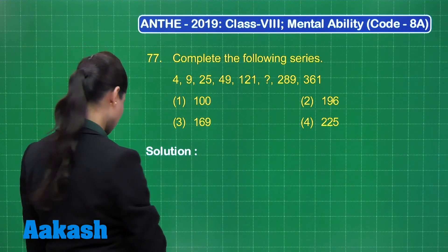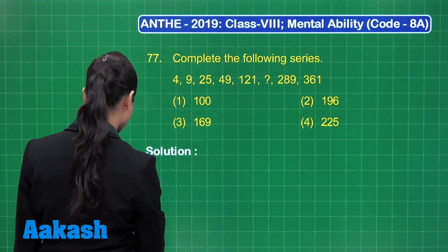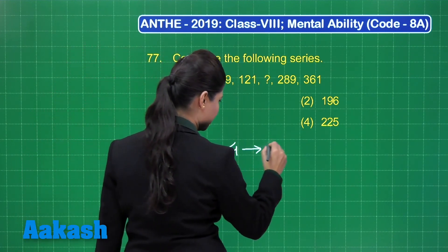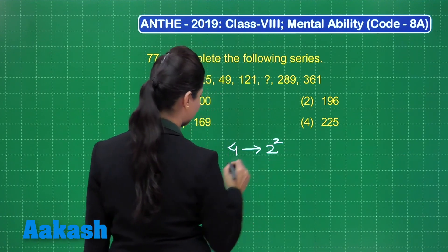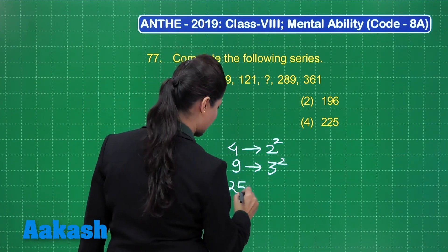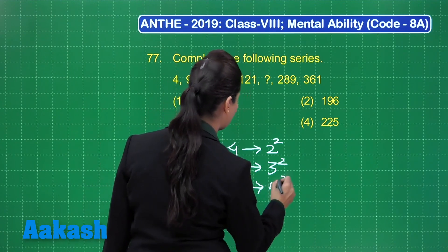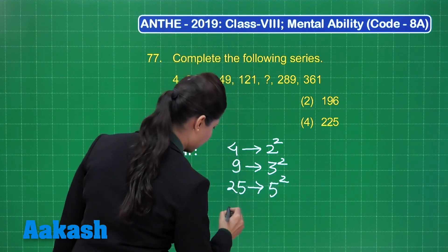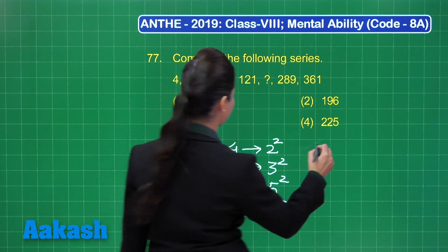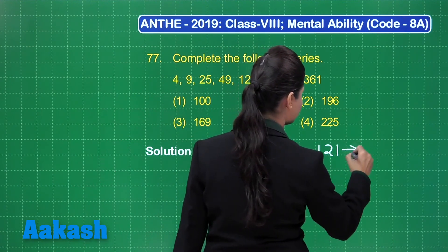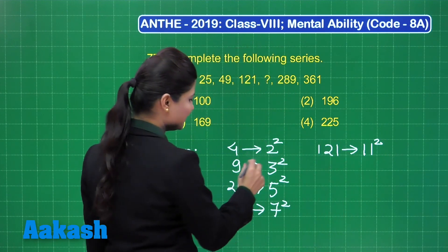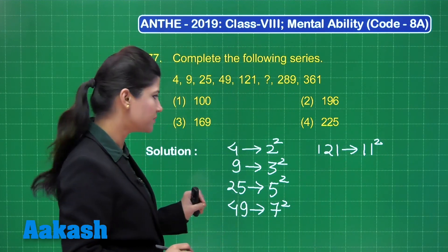When you observe these numbers, you can clearly find these are perfect squares. Here, 4 is 2 squared, 9 is 3 squared, 25 is 5 squared, 49 is the square of 7, and 121 is the square of 11. You can find these are the squares of prime numbers.